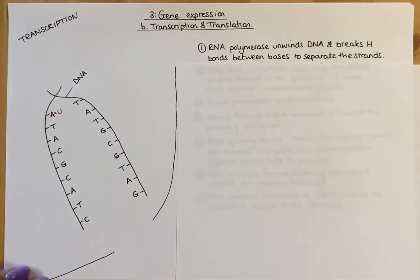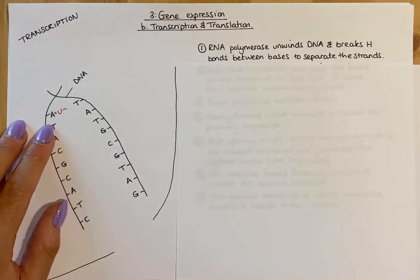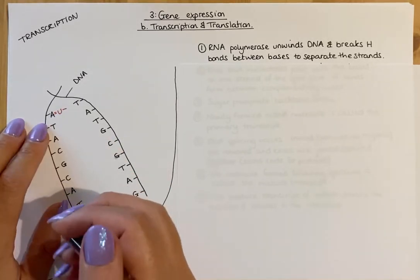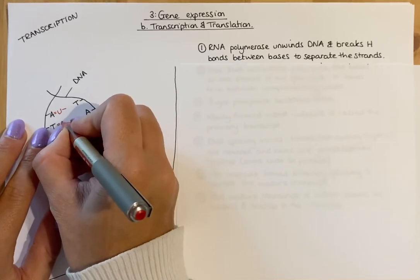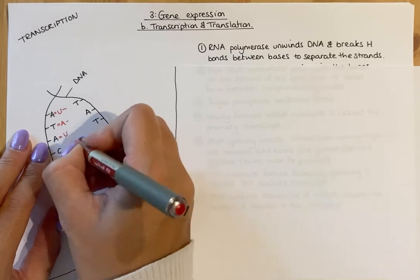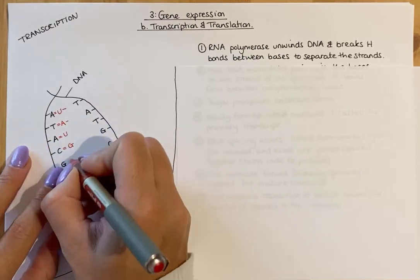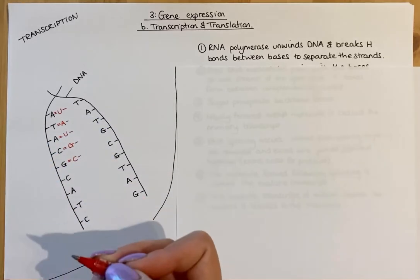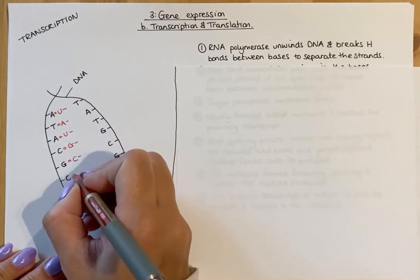Hydrogen bonds form between the bases on those nucleotides. So adenine would pair with uracil, and the same procedure would happen all the way down, forming complementary base pairs to form this strand of mRNA. Each of these little bits shown in red are RNA nucleotides in particular.